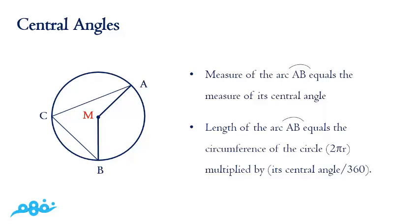160 degrees for example, so the arc AB is 160 degrees and the major arc AB equals 360 degrees minus 160 degrees.